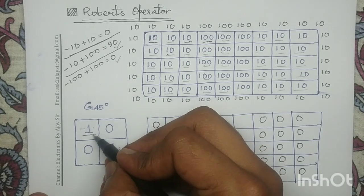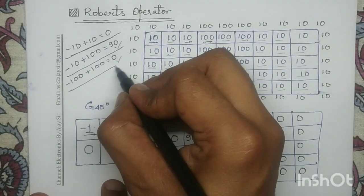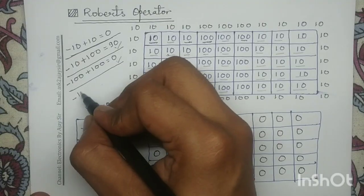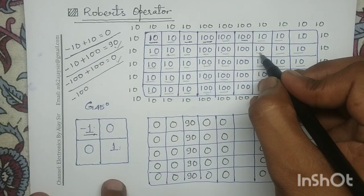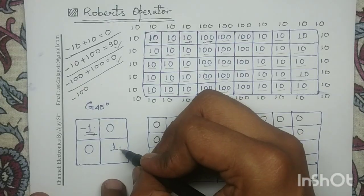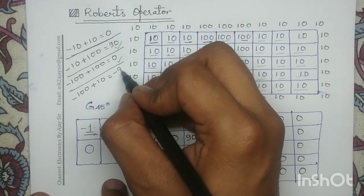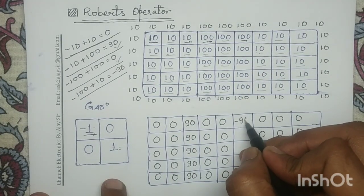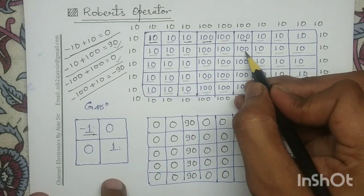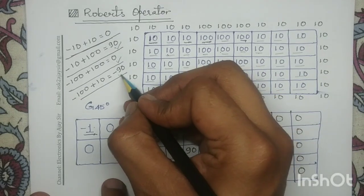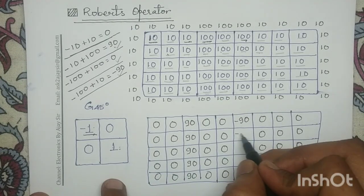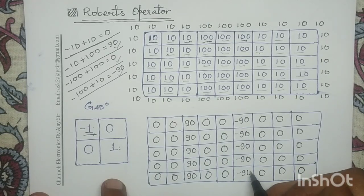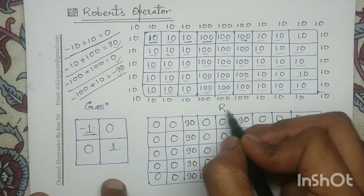Next, we apply the center of this mask at this point. This value 100 will be multiplied with coefficient minus 1, and this pixel value 10 will be multiplied with coefficient 1. So minus 100 plus 10 gives the result minus 90. In the similar way, for these four pixels you get the same response equal to minus 90. Let me name this response matrix as Rx.